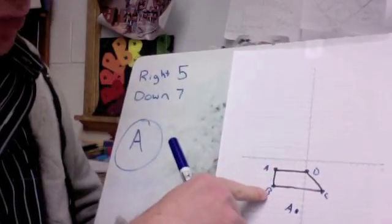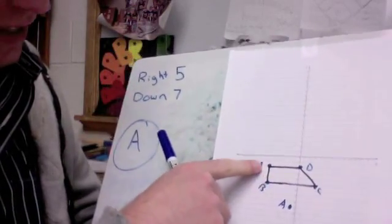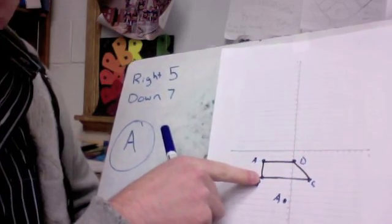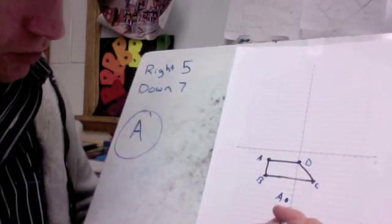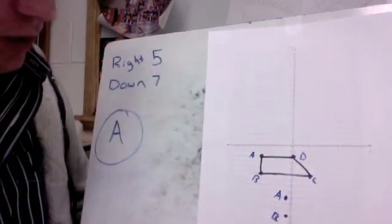Now, I'm not even going to move B. I'm not even going to count over for B because I can see that that is 1, 2, 3 below A. So I know that I did A right, so I'm just going to go 3 below A and put B right here.